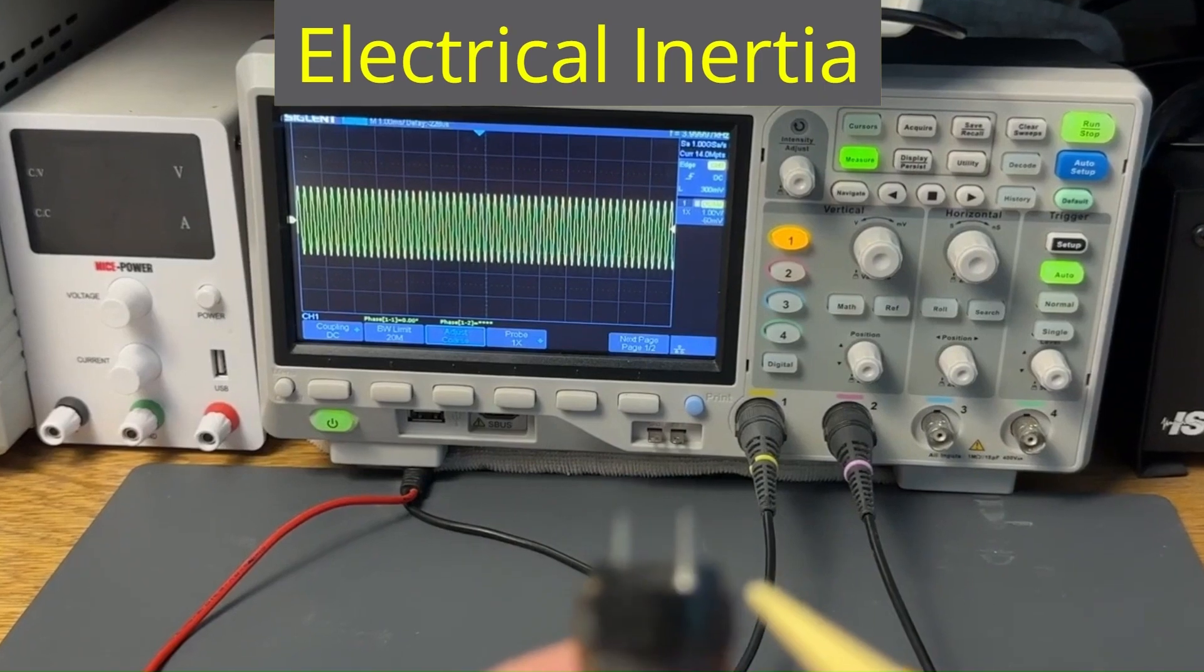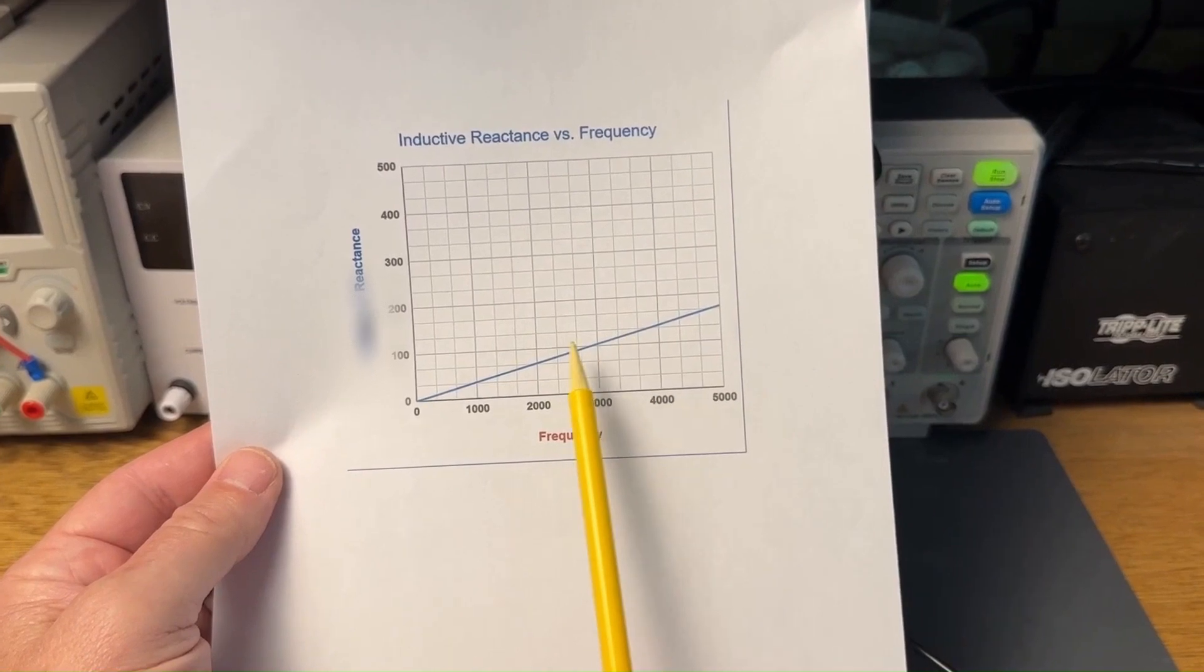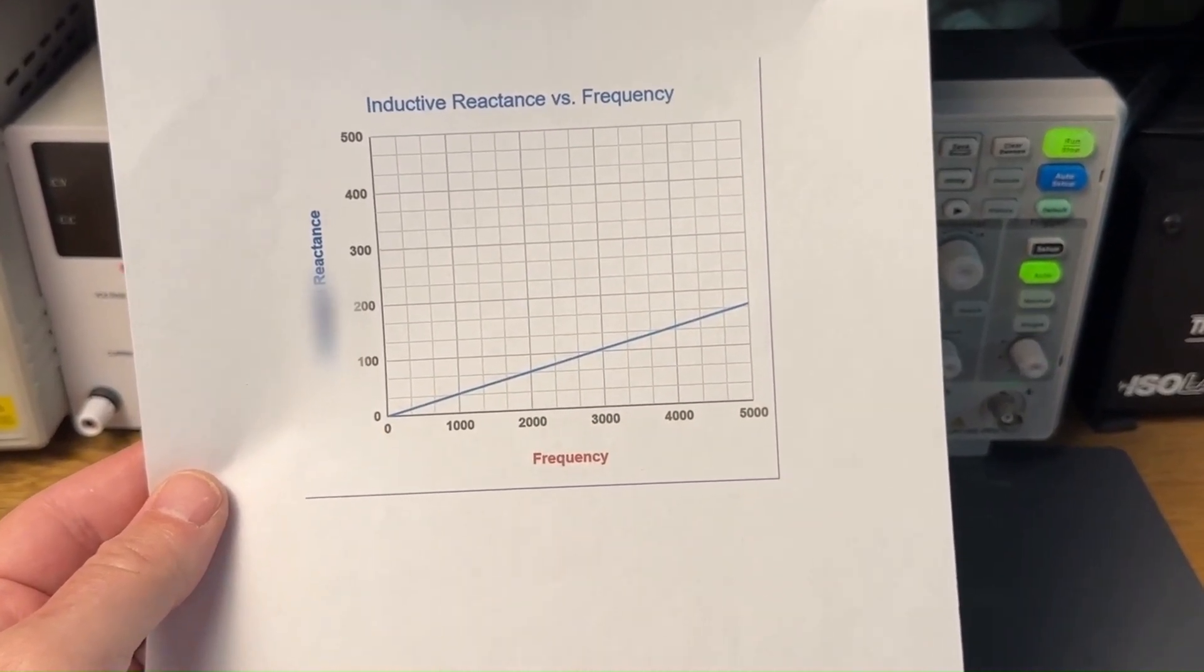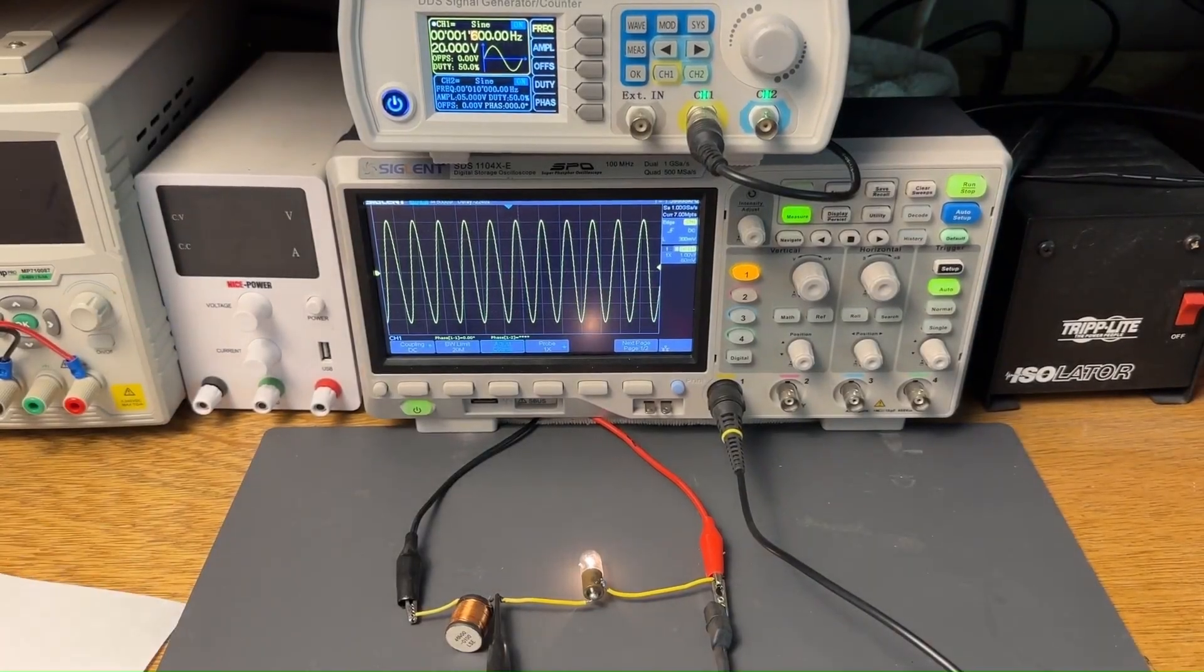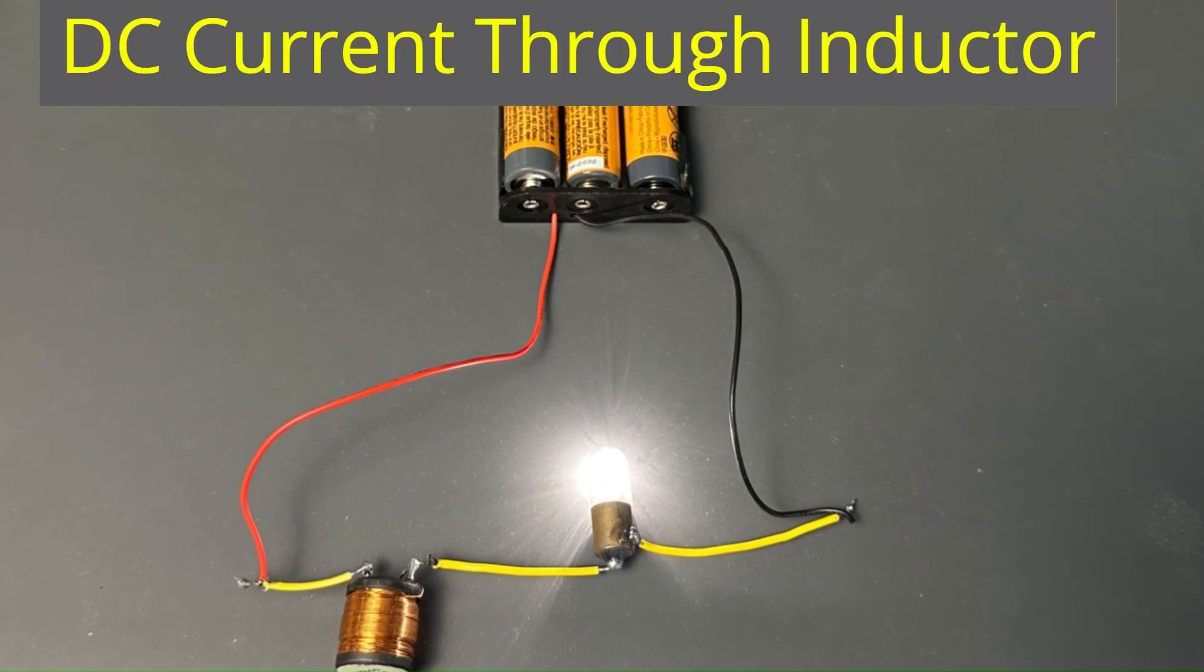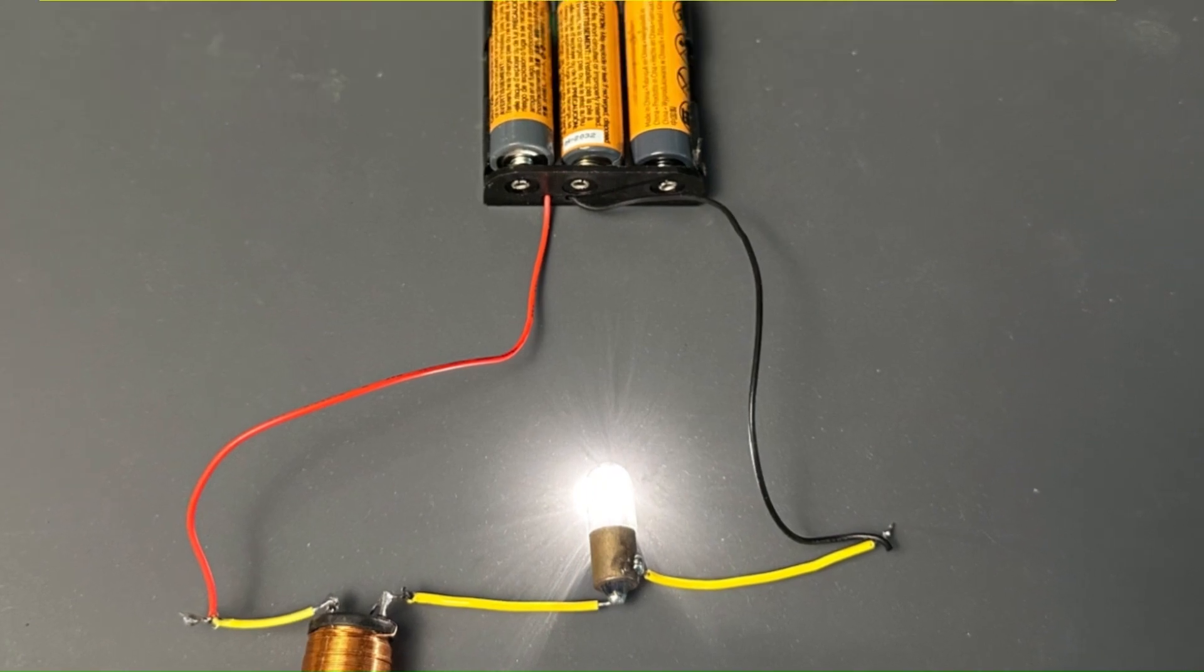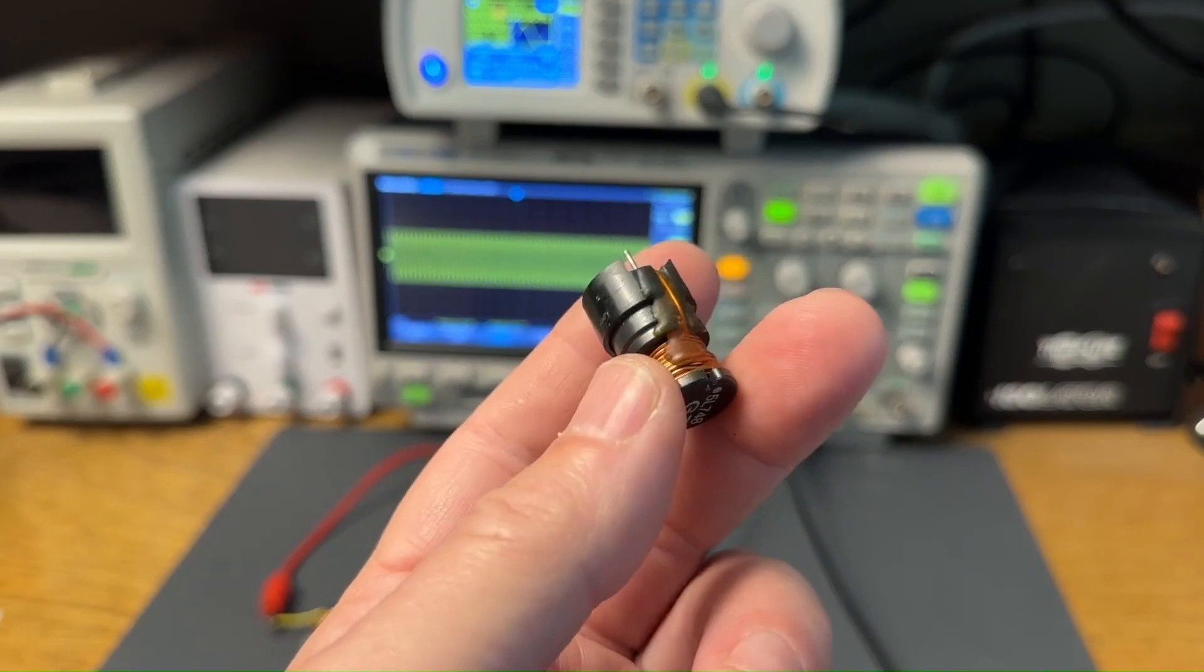On the other end of the spectrum, decreasing the frequency causes the ohms of the inductor to go down. As the current through the circuit from the signal generator approaches a frequency of zero hertz, also known as DC, the ohms, or the inductive reactance of the inductor, approaches zero. Hence, as DC voltage is applied to the circuit, the inductive reactance is at its lowest, presenting zero ohms within the circuit, and maximum current will flow. The inductor basically looks like a wire.